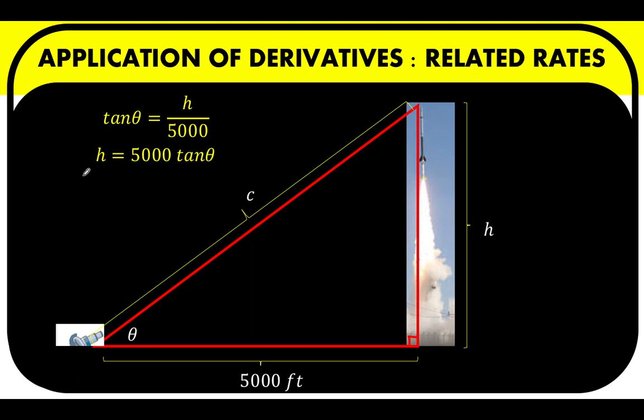So we can now perform implicit differentiation for this equation. Differentiating with respect to time, dh over dt is equal to this constant 5,000 times the derivative of tangent theta which is equal to secant squared theta d theta over dt. Because we are differentiating with respect to time.